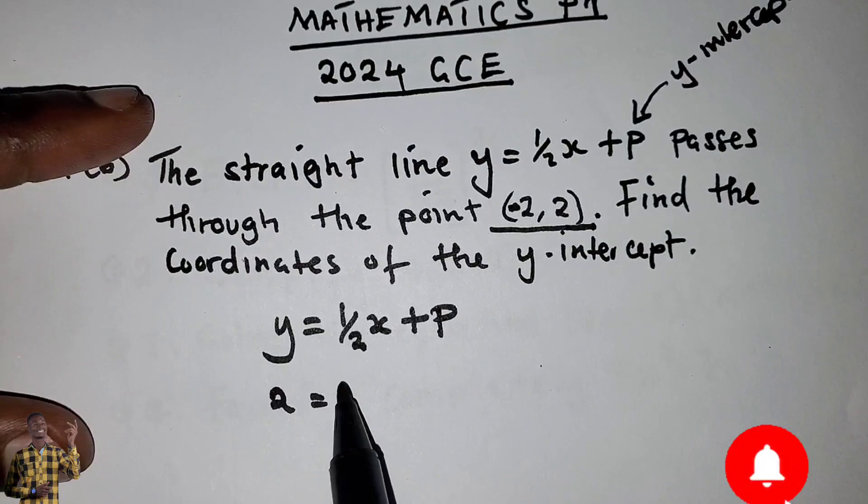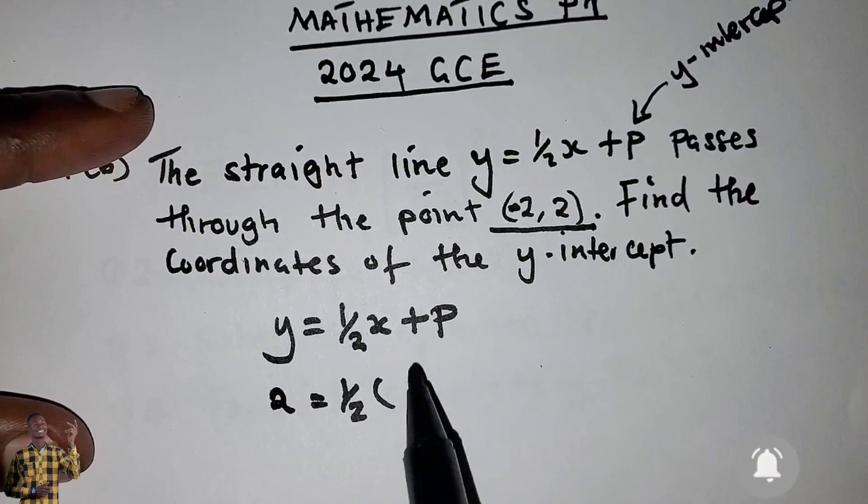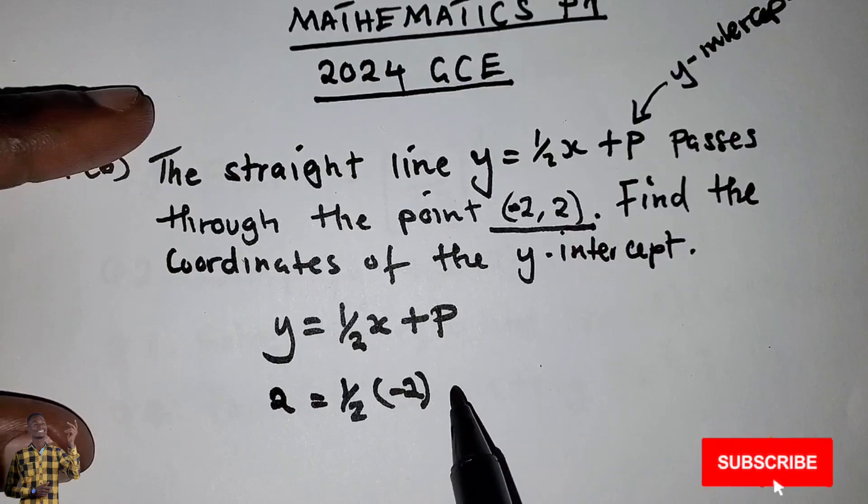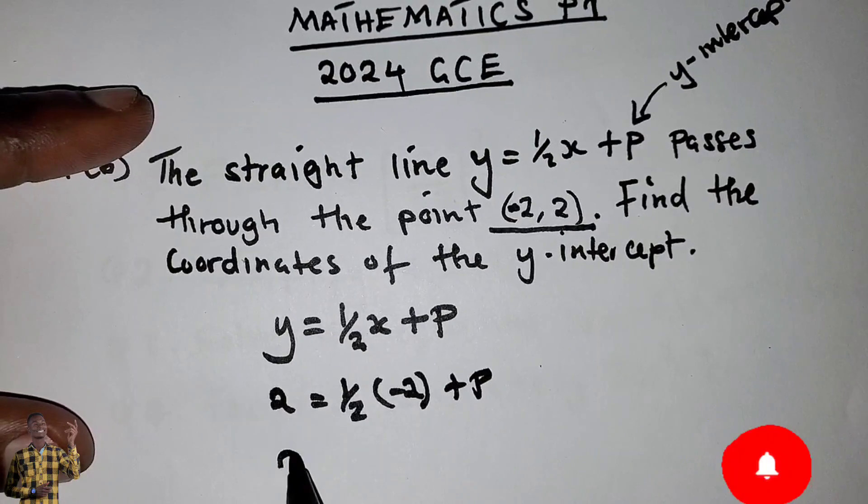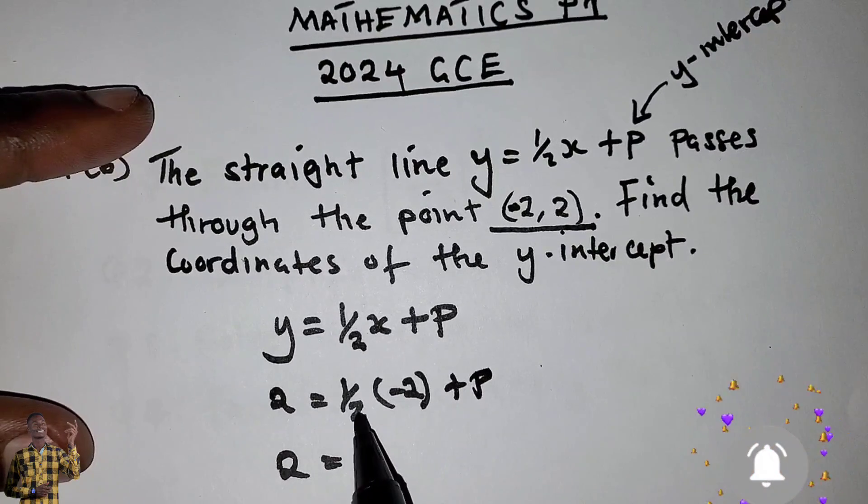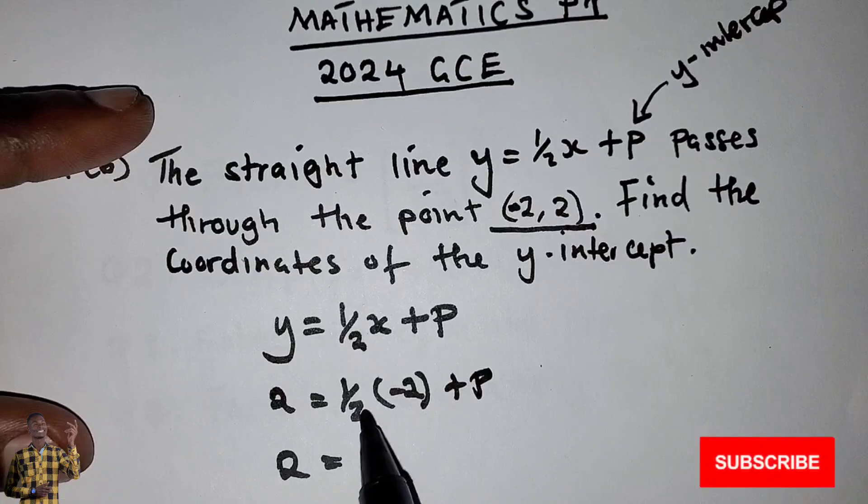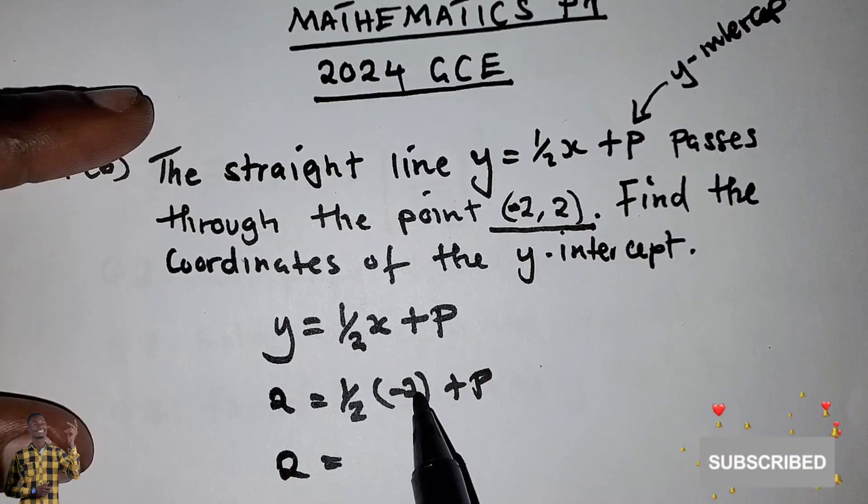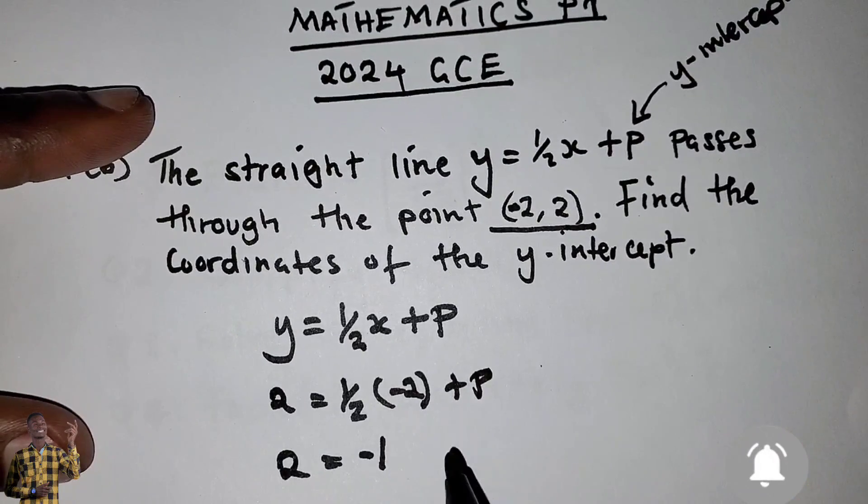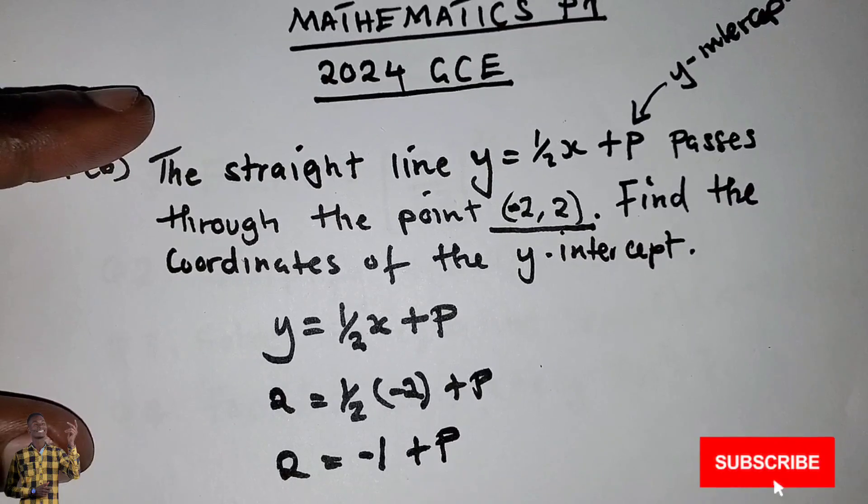2 equals 1/2 times x, where x is negative 2, plus P. So 2 equals negative 1 plus P.